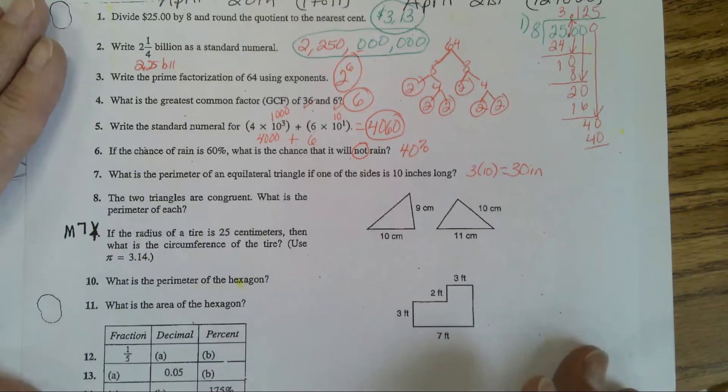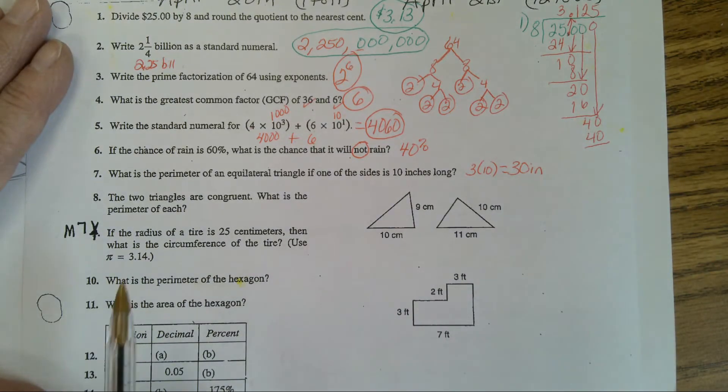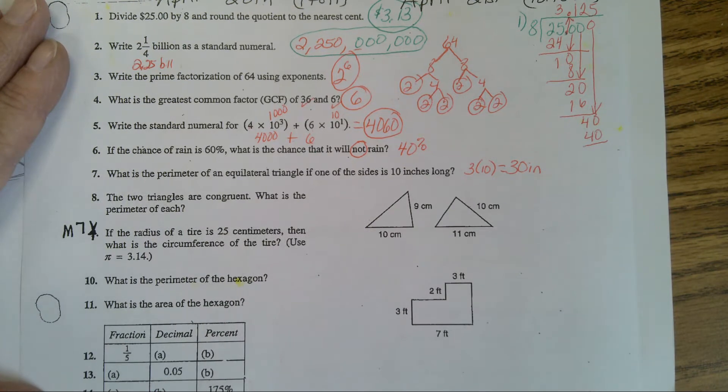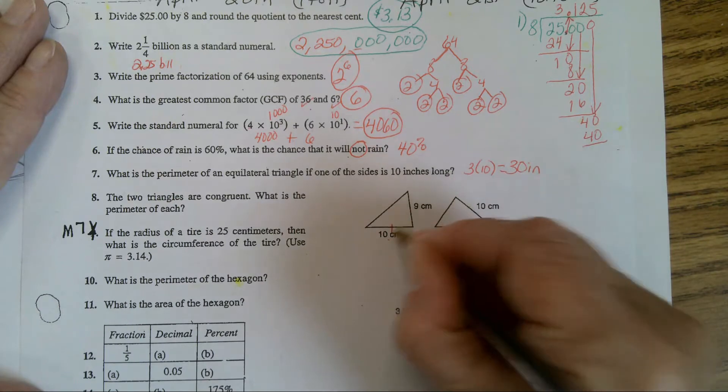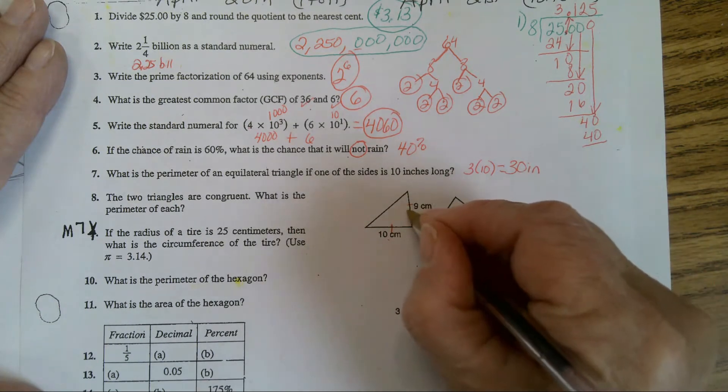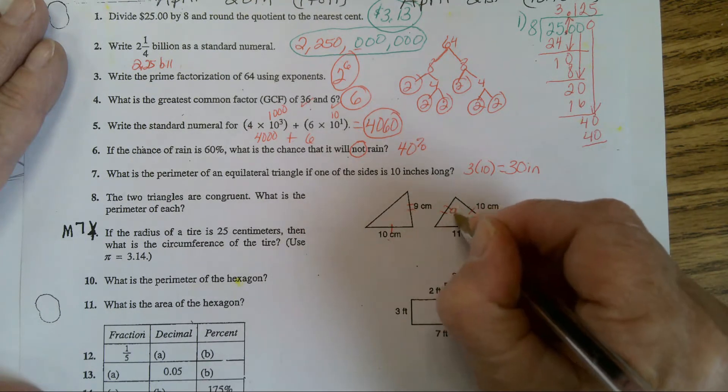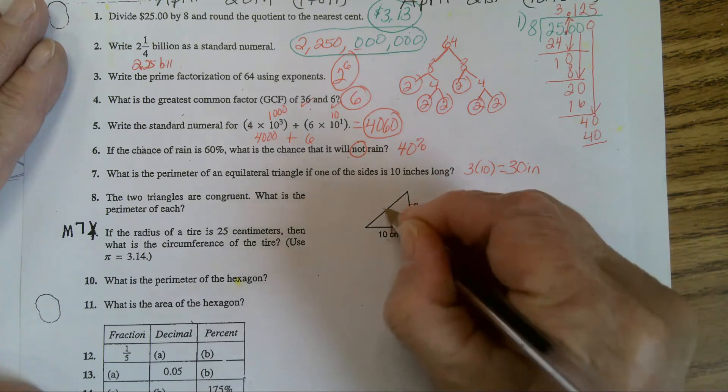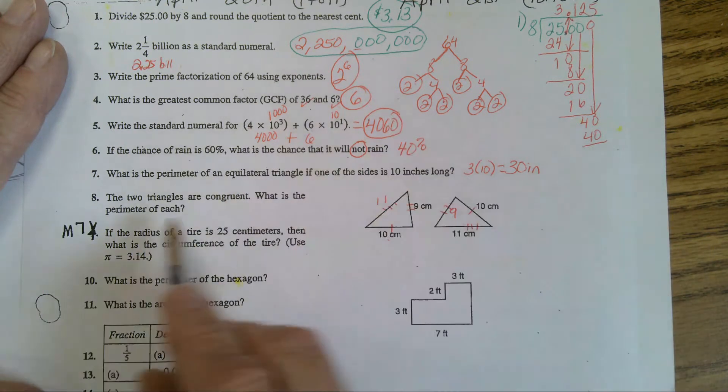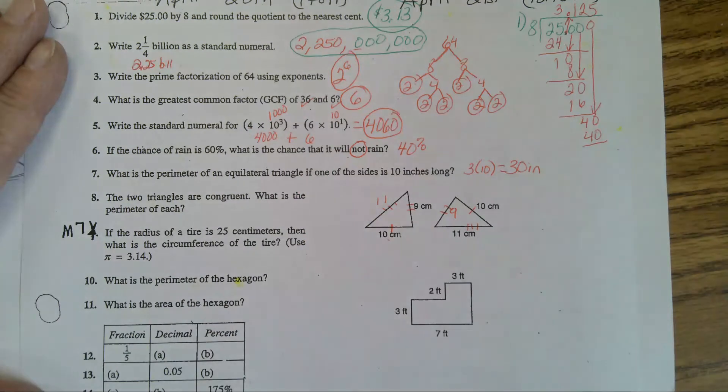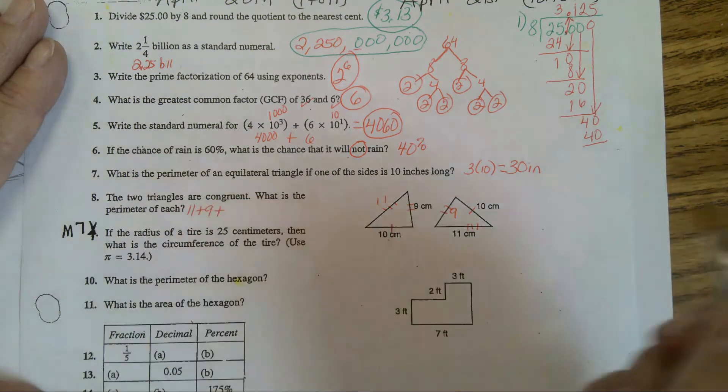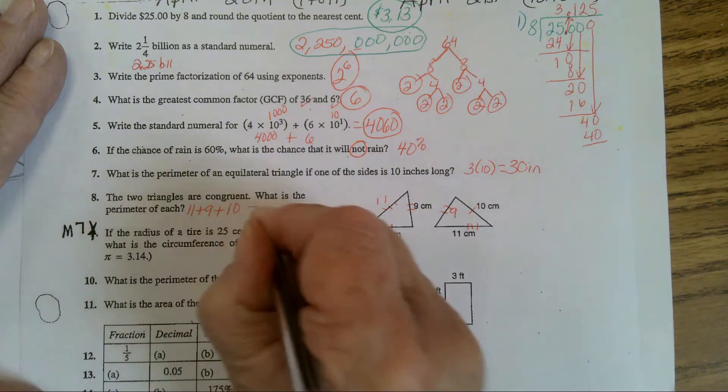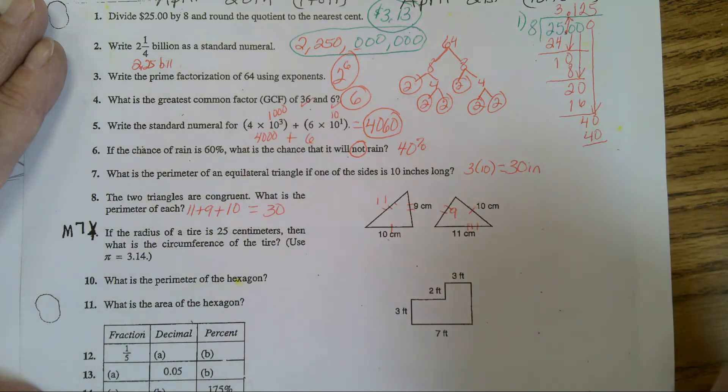Number 8. Two triangles are congruent. What is the perimeter of each? Now they're talking about these. So 10, 10. If this is 9, then this one's 9. And if this one's 11, that means this one's 11, right? So each one's going to have the same perimeter. 11 plus 9 is 20 plus 10 equals 30 centimeters.